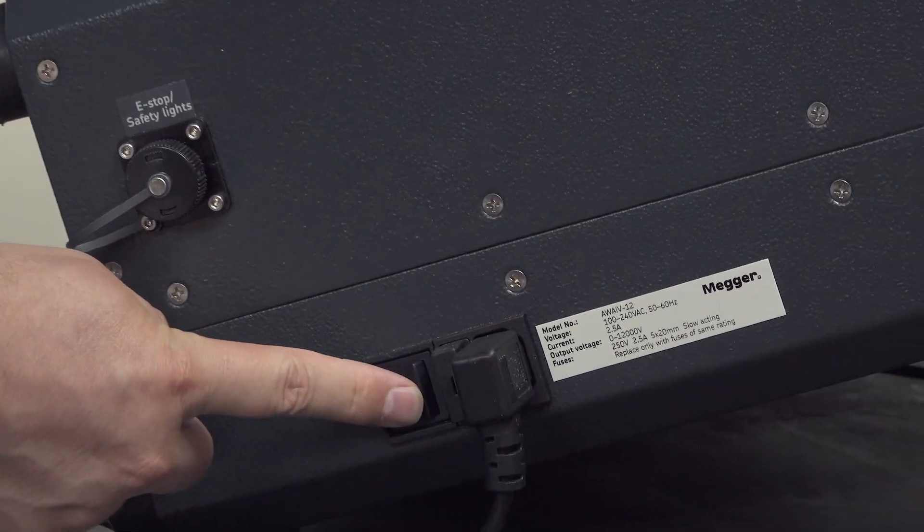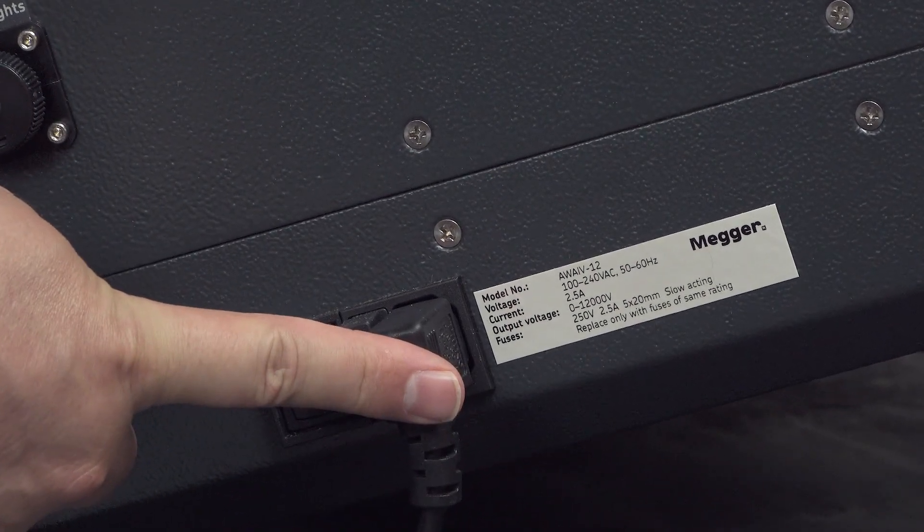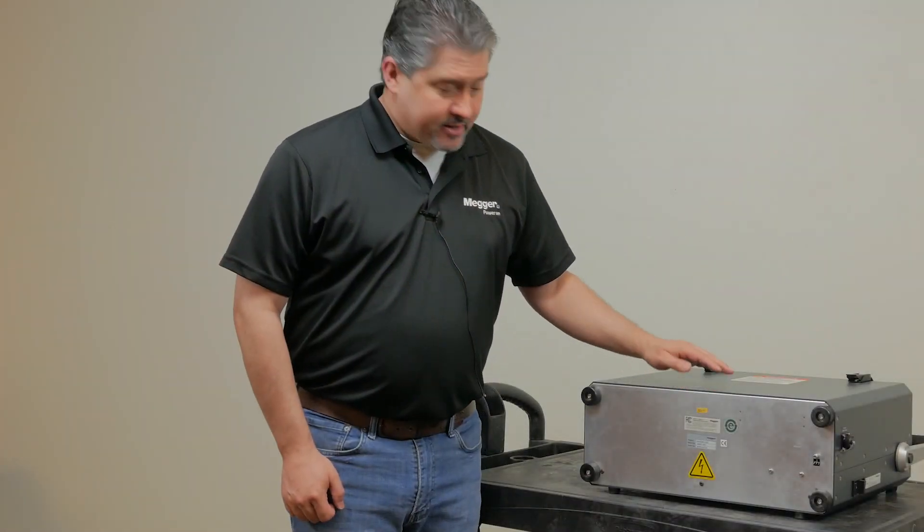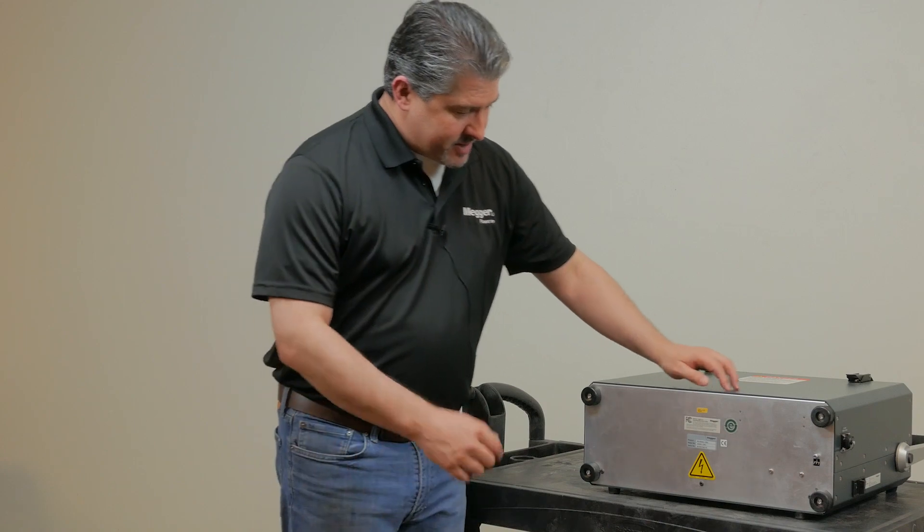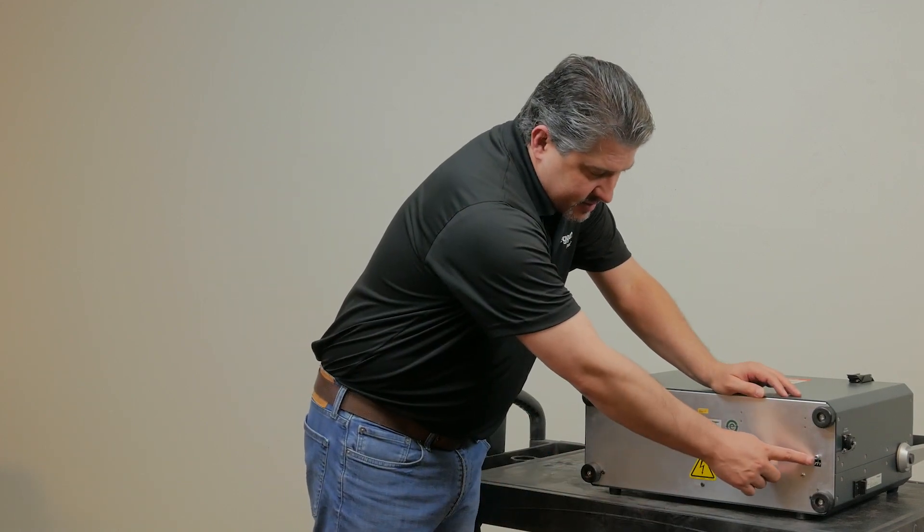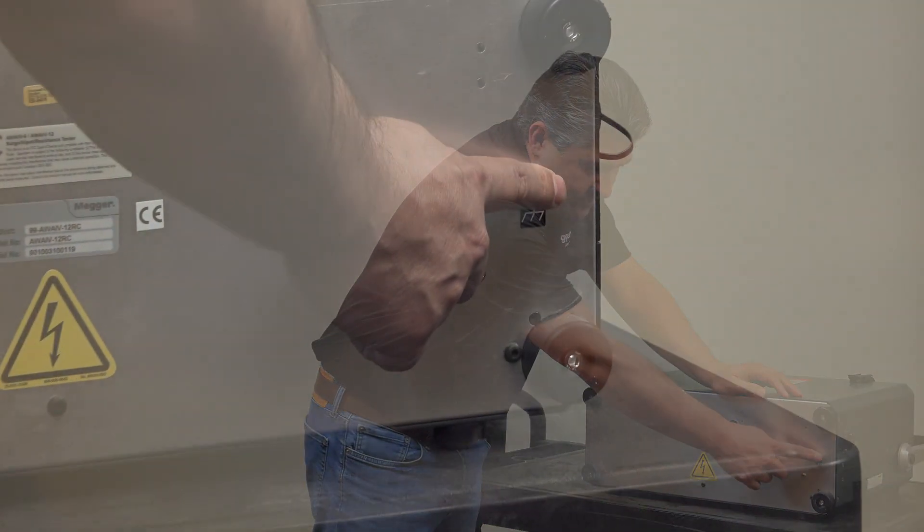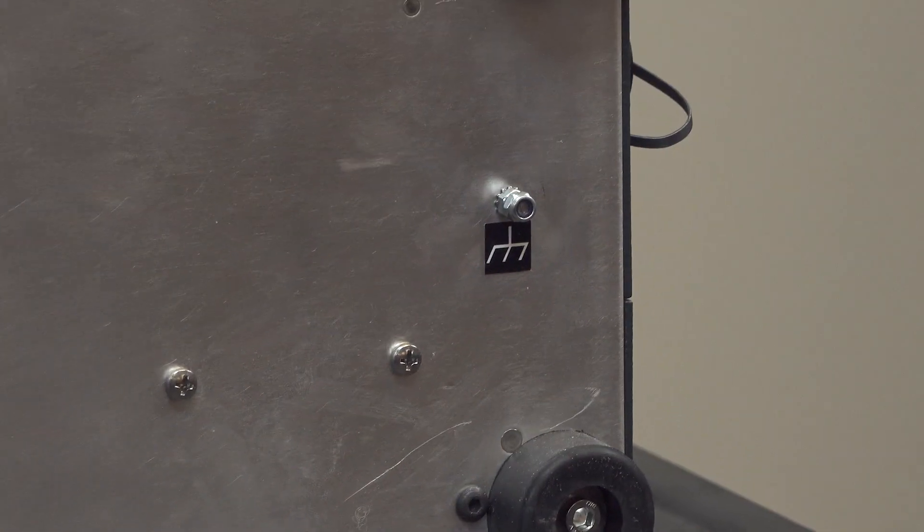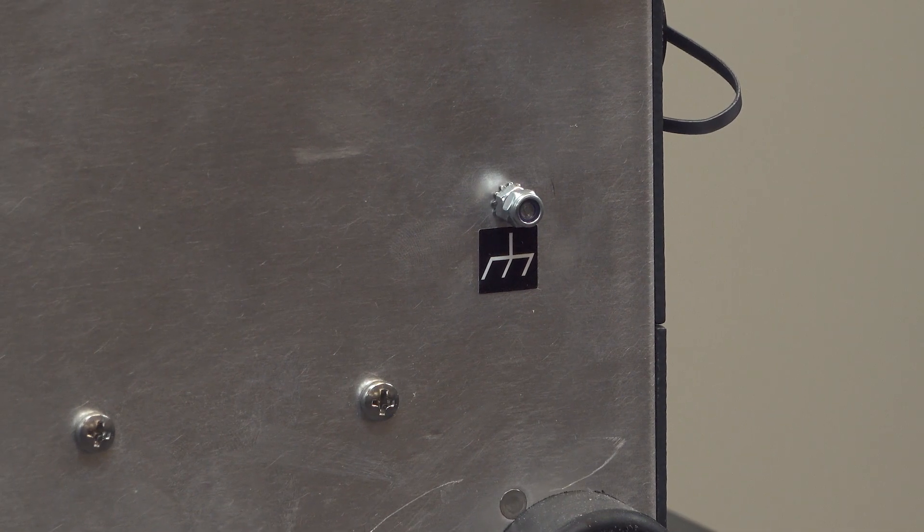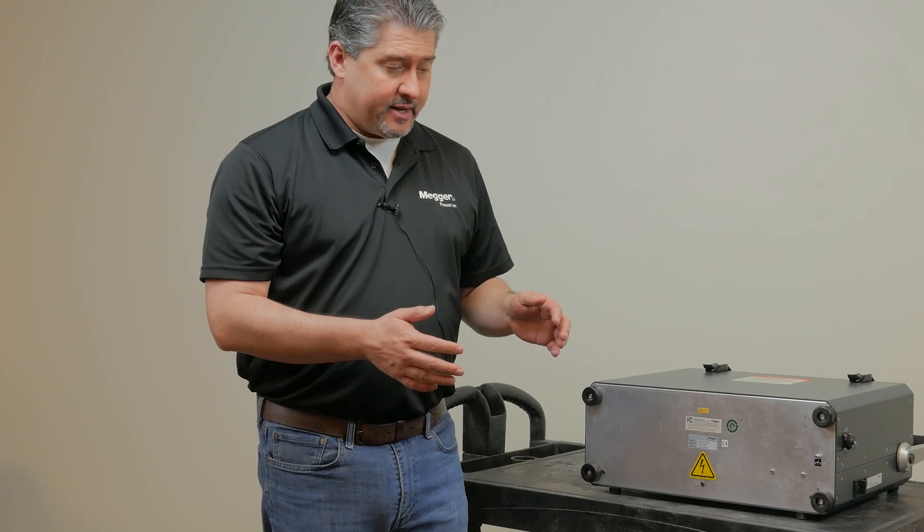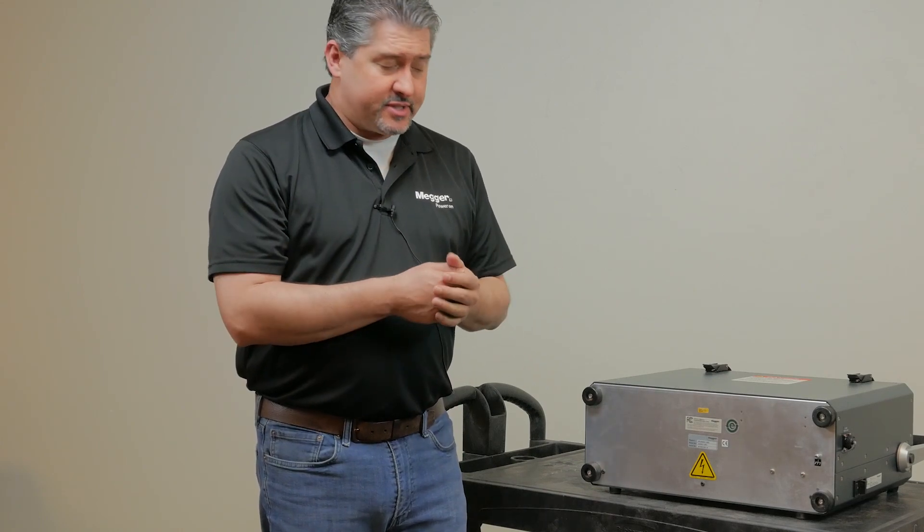Of course we have the on-off button and the power supply cable. The back of the AWA has a few things we'd like to point out. The first is the ground post that's provided to ground the chassis external from the power supply. You'll want to use that if you're in an ungrounded distribution system.